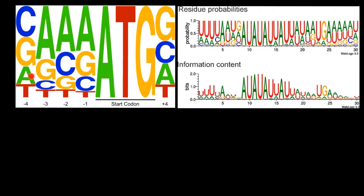If you would take a look at this left picture, you would see that here we have some DNA sequence. This is DNA because we have thymine here, so this is not RNA. We have here one sequence that is highly conserved. So if we compare many sequences at position 1, 2, and 3 we would always find adenine, thymine, and guanine. And at positions minus 4, minus 3, minus 2, minus 1 we can actually find any of the bases.